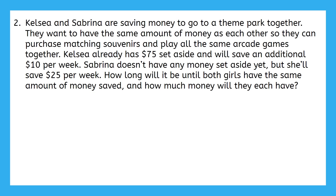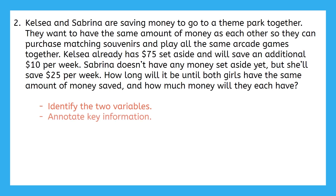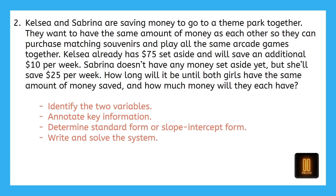Here's our second example problem. You may want to pause here and read through this problem on your own first. Kelsey and Sabrina are saving money to go to a theme park together. They want to have the same amount of money as each other so they can purchase matching souvenirs and play all the same arcade games together. Kelsey already has $75 set aside and will save an additional $10 per week. Sabrina doesn't have any money set aside yet, but she'll save $25 per week. How long will it be until both girls have the same amount of money saved? And how much money will they each have? Start by identifying what the two variables are and annotating key information, then determine if you should write equations in standard form or slope-intercept form, then write and solve your system.